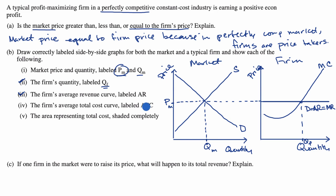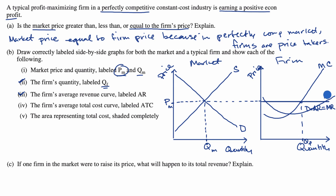For the firm's average total cost curve (ATC): at quantity Q sub F, the average total cost needs to be below the marginal revenue and average revenue, because we know the firm is earning a positive economic profit. So the ATC curve is drawn such that at Q sub F, our marginal revenue and average revenue is above our average total cost — that tells us we're earning economic profit.